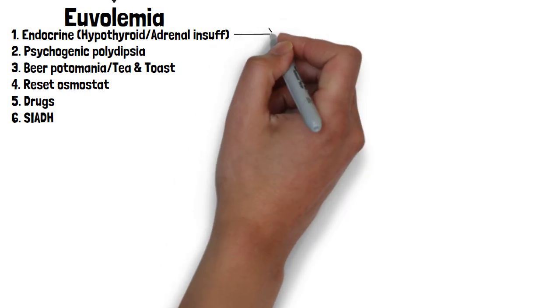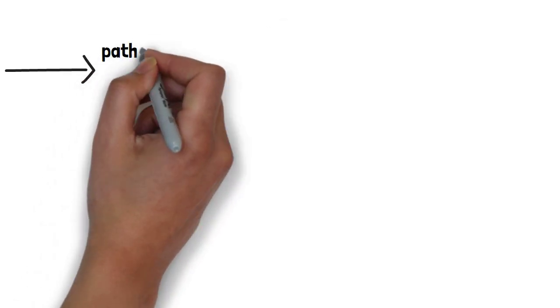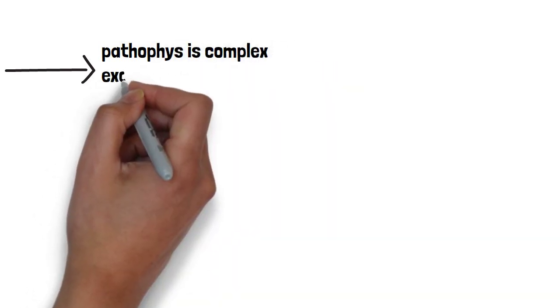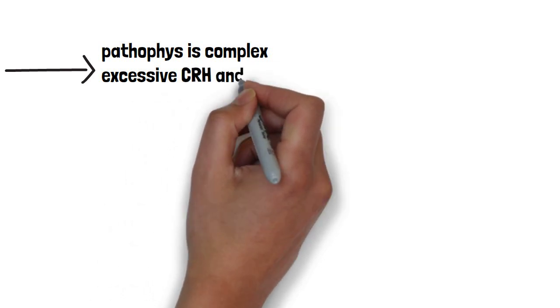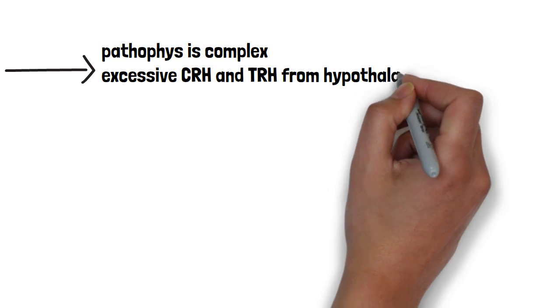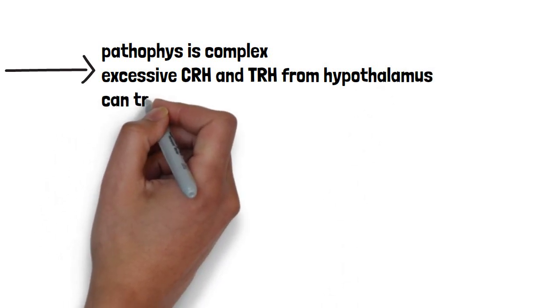When it comes to endocrinopathies, the pathophys is much more complex than I can just explain here in a short video. The bottom line is there's excessive CRH and TRH. As they go into the pituitary, they can eventually go on to hit ADH receptors in the posterior pituitary, adding more ADH, thus more water.